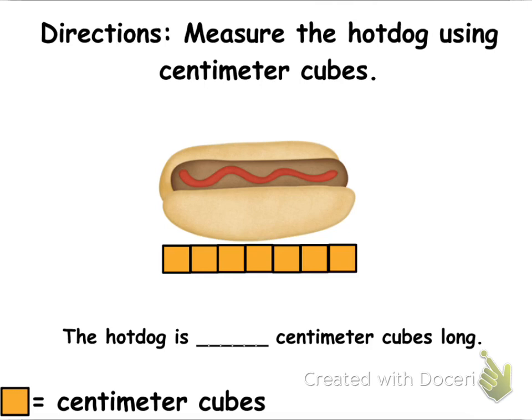In this lesson, it's all about being able to express the length of an object using centimeter cubes. Now, looking at this, we have a picture of a hot dog. And we're going to use the centimeter cubes to help be able to measure the hot dog. So, each of these squares is a centimeter cube.